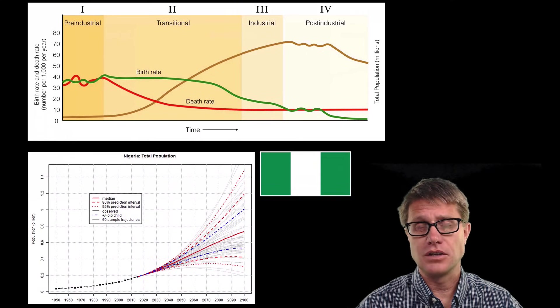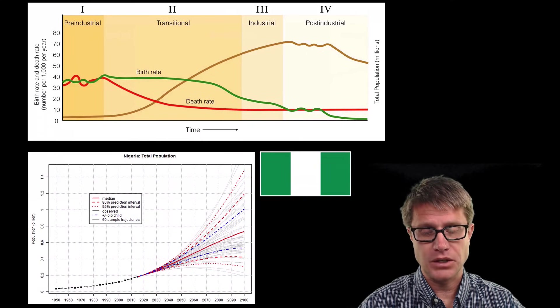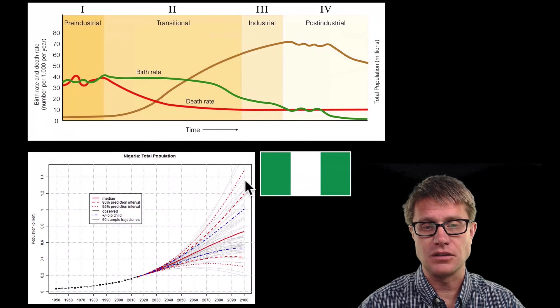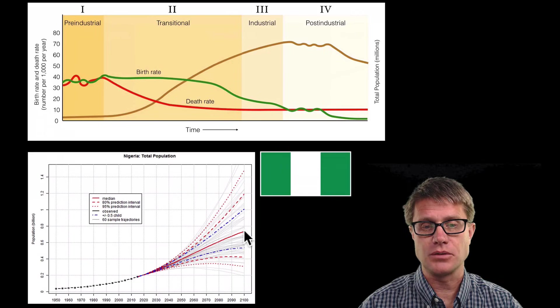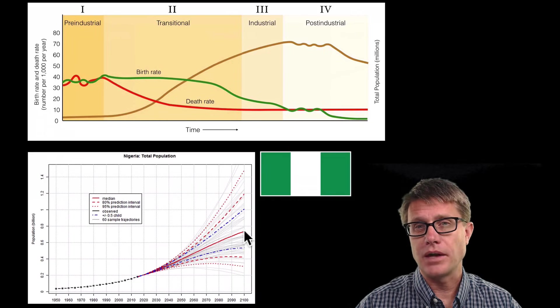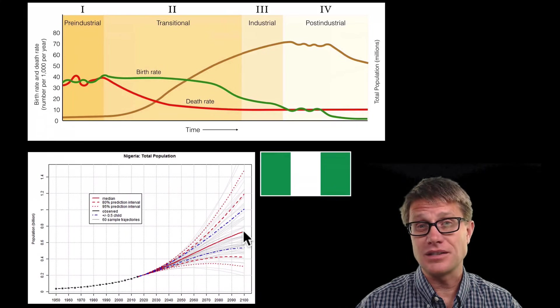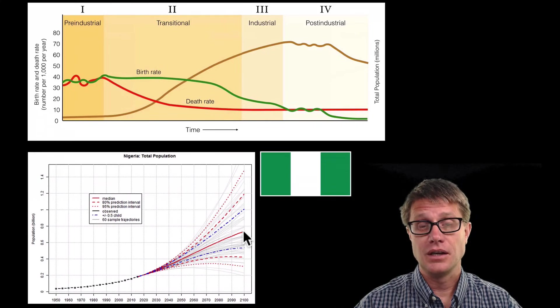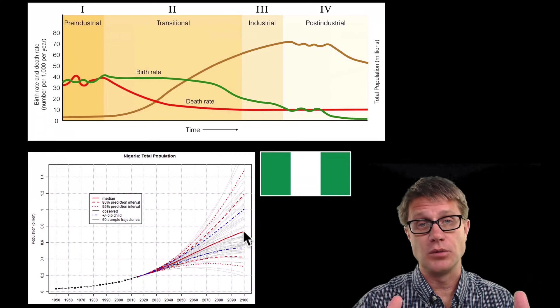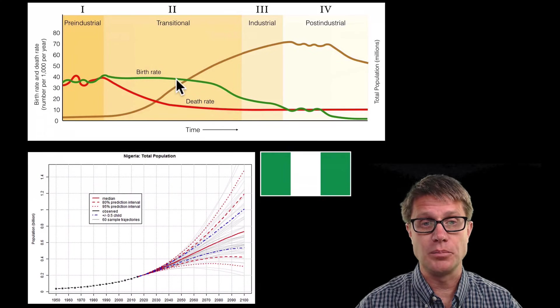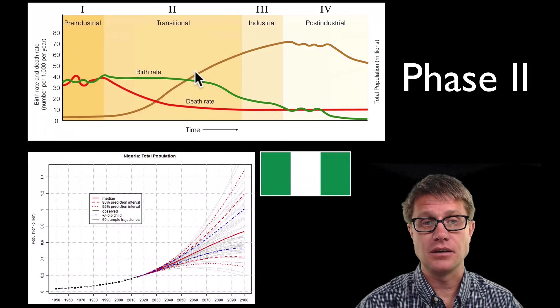So if we look at some ones that are in different phases. Nigeria, so this is UN predictions. All these lines are different predictions. But this is what we think will happen to Nigeria into the future. By 2100 we could have maybe 700 million people in Nigeria. So you can see that is going to move it way up on the list. Where would we put that? It is somewhere in here in phase 2.